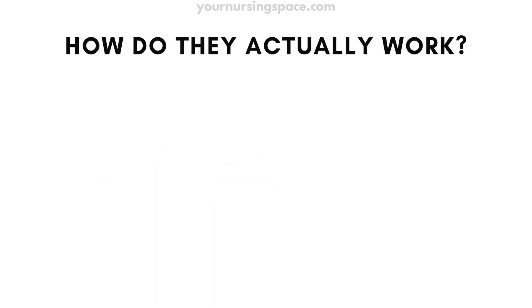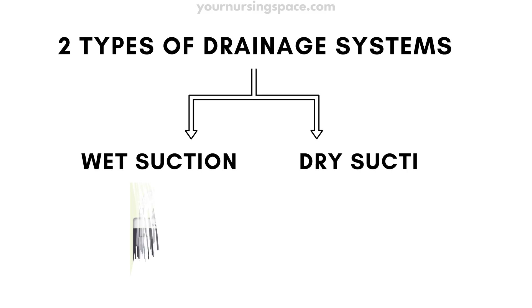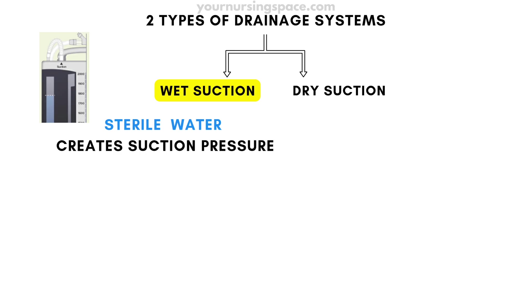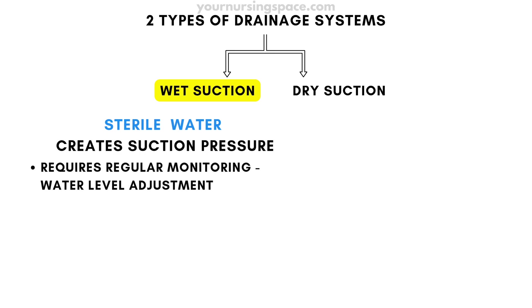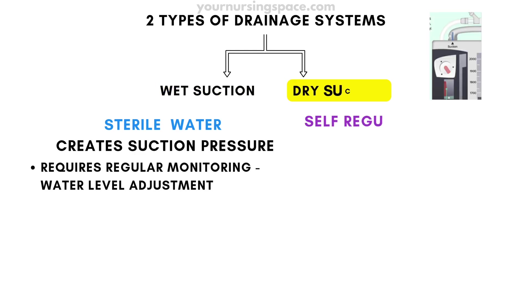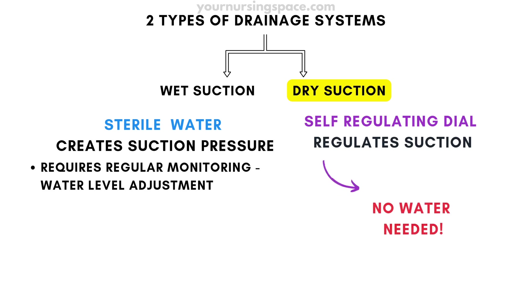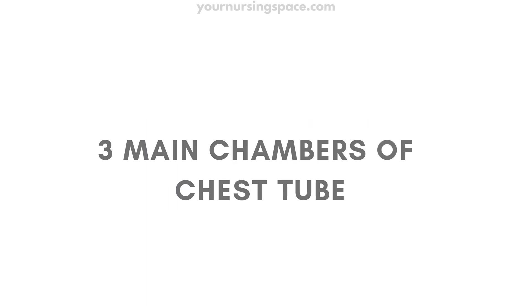Now that we know why chest tubes are used, let's break down how they actually work. There are two main types of drainage systems: wet suction and dry suction. Wet suction uses sterile water to create suction pressure and requires regular monitoring and water level adjustments. Dry suction uses a self-regulating dial to adjust suction — no water is needed, so it's easier to maintain.